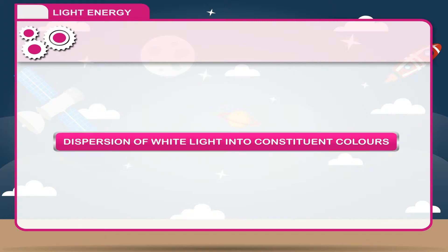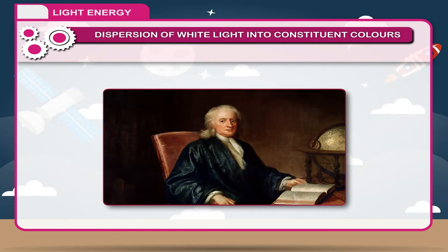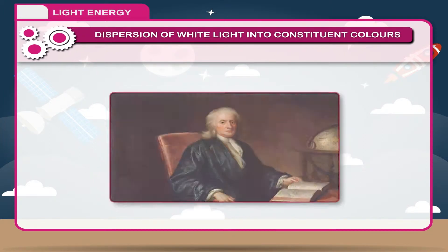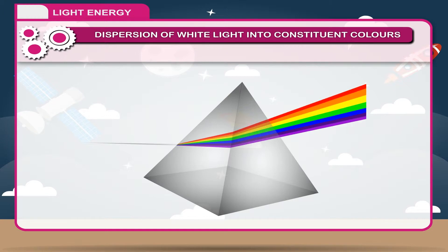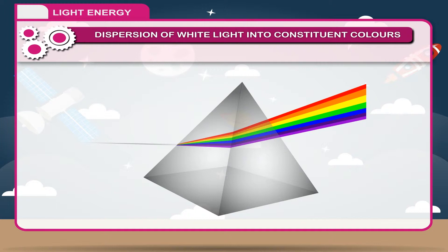Dispersion of white light into constituent colours. Newton was the first to study the behaviour of white light when it is passed through a prism. He said that when white light is allowed to pass through a prism, it breaks into its constituent colours. This is called dispersion of light.